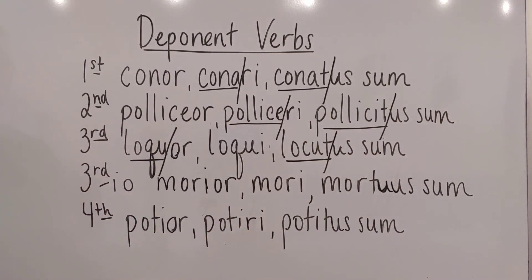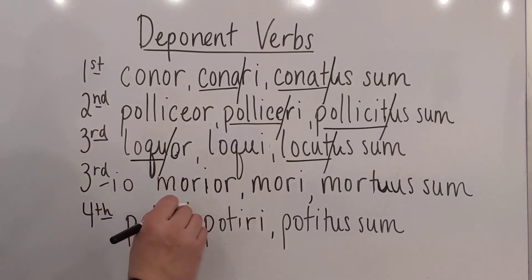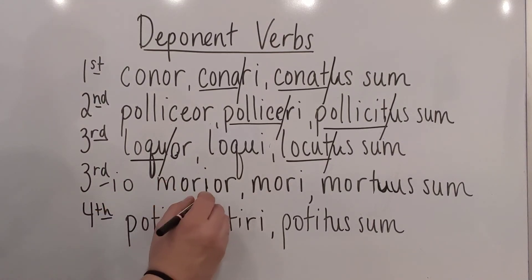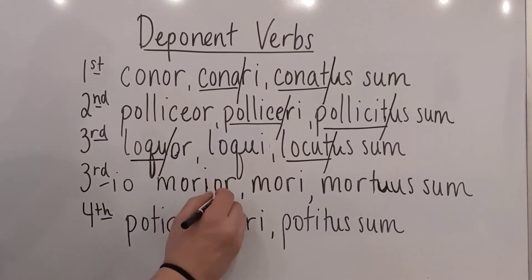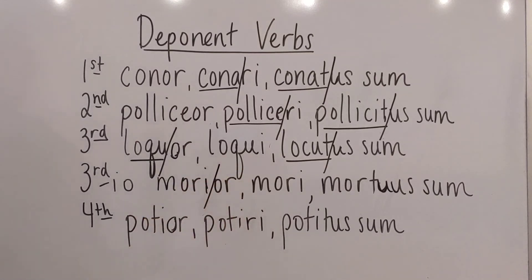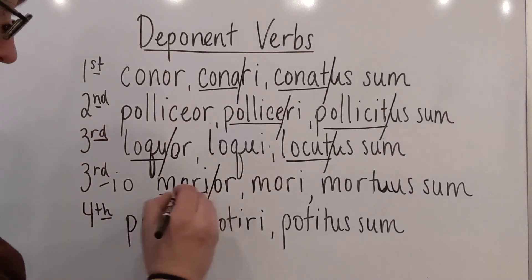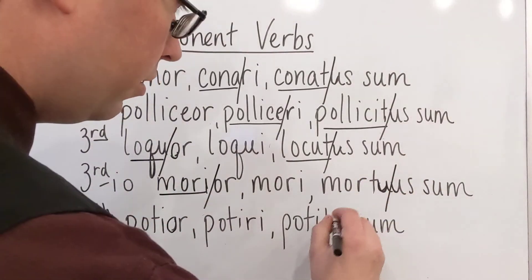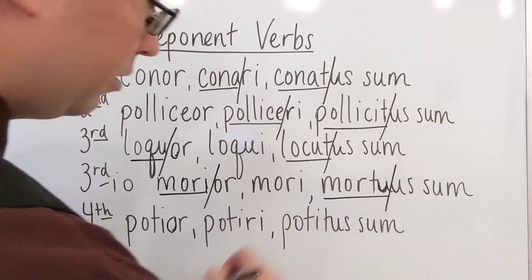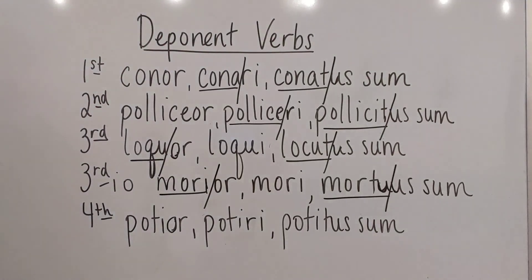Morior, mori, mortuus sum. Third io, like an ordinary io verb: chop the -o off the first principal part; in passive land, you're going to chop the -or. So you get mori- as the stem. And then mortu- is going to be the supine stem. That verb does odd things in the future.